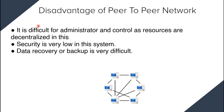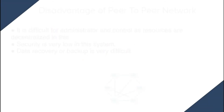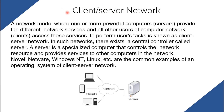Now let's see the disadvantages of peer-to-peer network. It is difficult for administration and control, as resources are decentralized. Security is very low in this system, and data recovery or backup is very difficult. Those are the three major disadvantages: difficult administration, low security, and difficult data recovery.